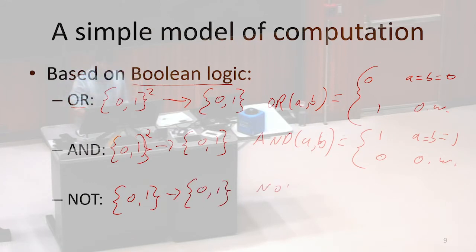And the way that not works is we say not applied to A is going to give us 1 if A was 0 and 0 otherwise. So this is going to be our underlying math that we're going to use to build a couple of different models of computation.